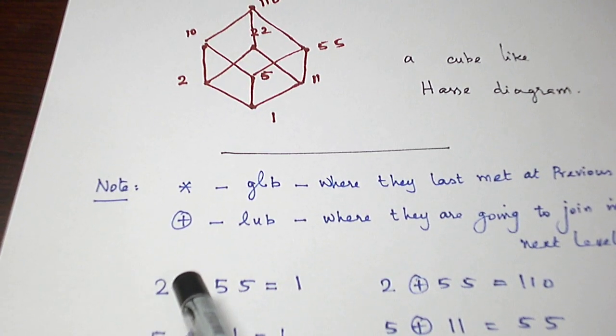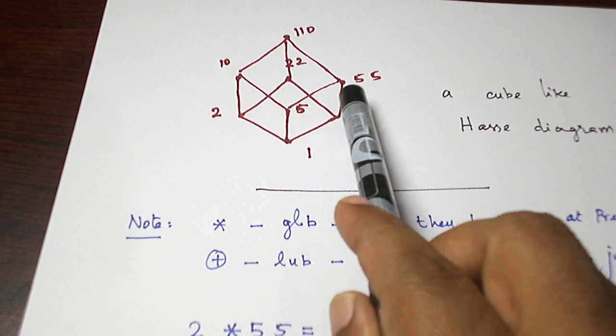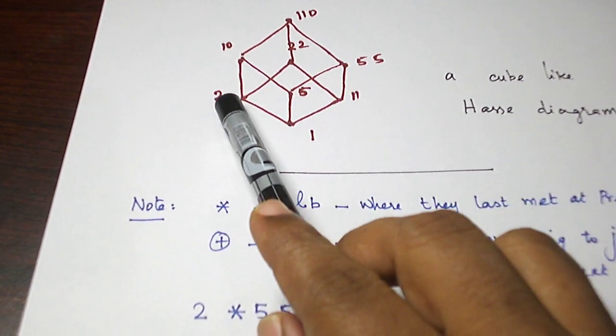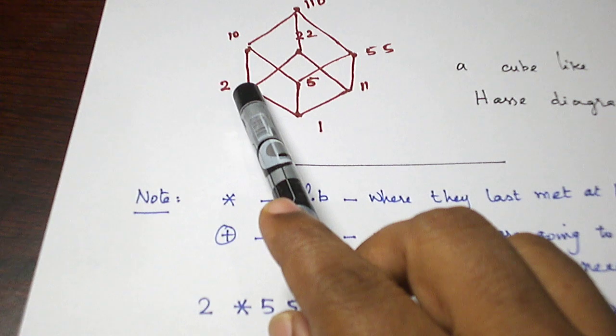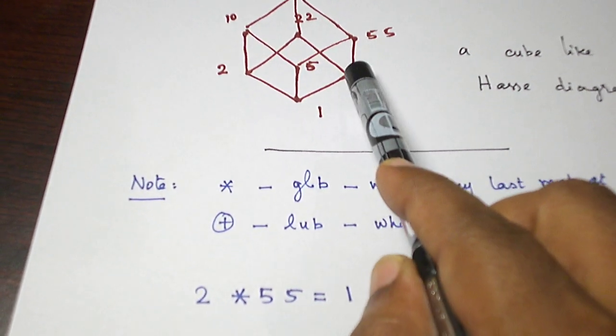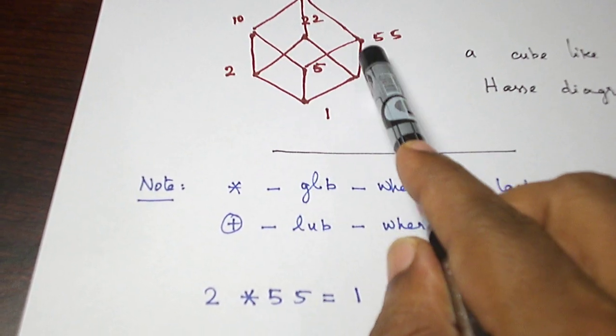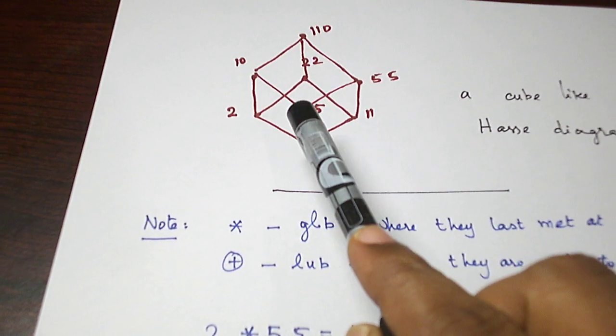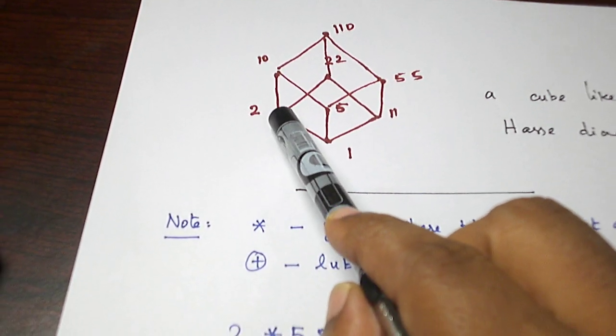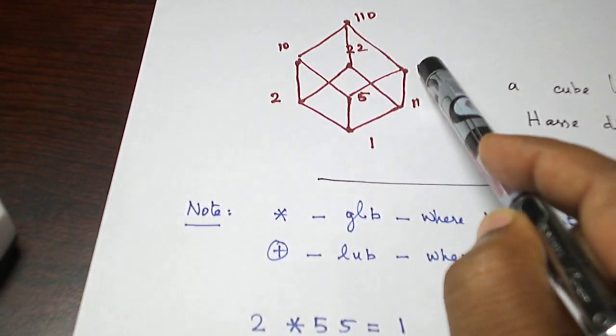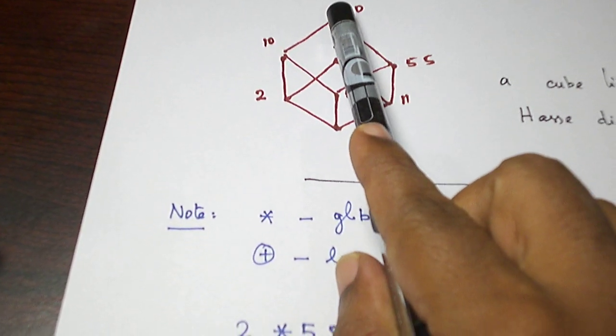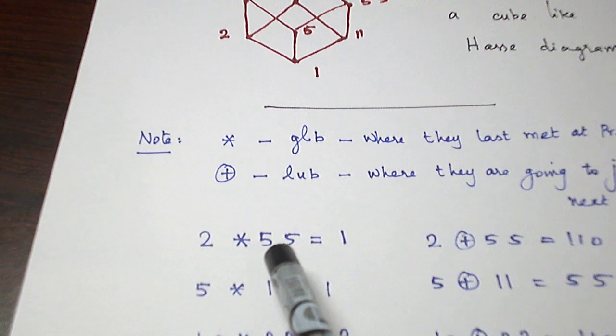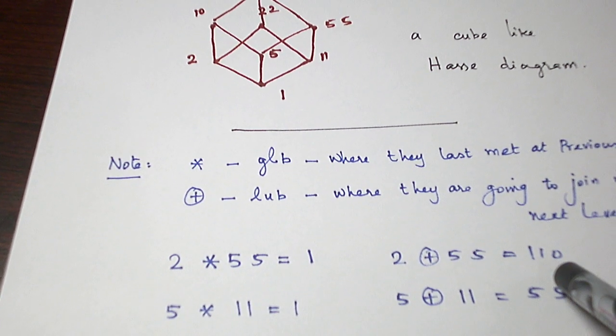If you look at 2 and 55, where they last met. Look at my hand movement. 2 and 55 last met at 1 in the previous level. And, where they are going to join again in the next level. 2 and 55 are going to join at 110. So, 2 star 55 is 1, 2 plus 55 is 110.